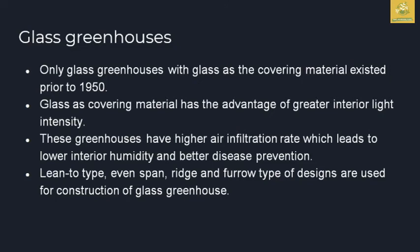Glass was the only greenhouse covering material prior to 1950. Glass provides greater interior light intensity than any other material and produces a higher air infiltration rate, leading to lower interior humidity and better disease prevention. Lean-to, even span, and ridge-and-furrow type designs are used for the construction of glass greenhouses.